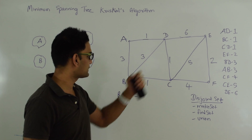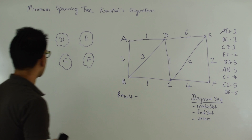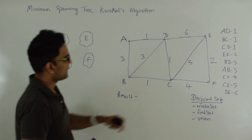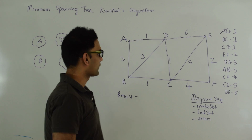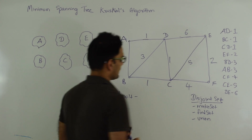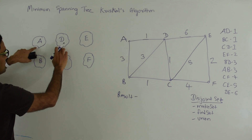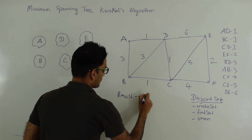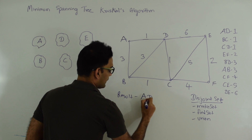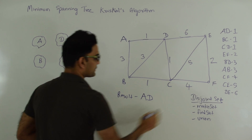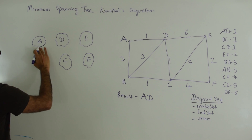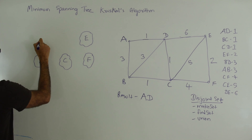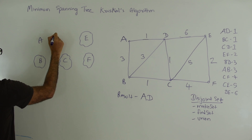So let's try with this example here. I have already created six different disjoint sets and I have already sorted the edges in non-decreasing order. First let's pick edge AD. A and D are in two different disjoint sets, so we'll pick AD into the final result and using the union operation of disjoint set we'll merge AD into one set.